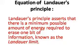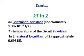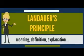Landauer's principle says that there is a minimum possible amount of energy required to erase one bit of information, known as Landauer's limit. The Landauer equation is kT·ln2, where k is Boltzmann's constant with value 1.38×10⁻²³ J/K, T is the temperature in Kelvin, and ln2 is the natural logarithm with value 0.69315.